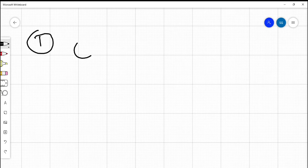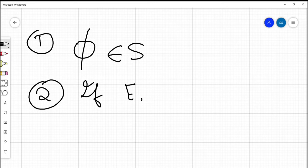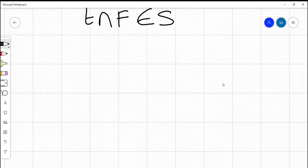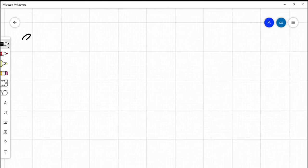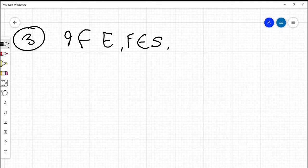Firstly, the empty set should always belong to S. Second, if E and F are two sets that belong to S, then E intersection F should also belong to S. And finally, the third condition is that